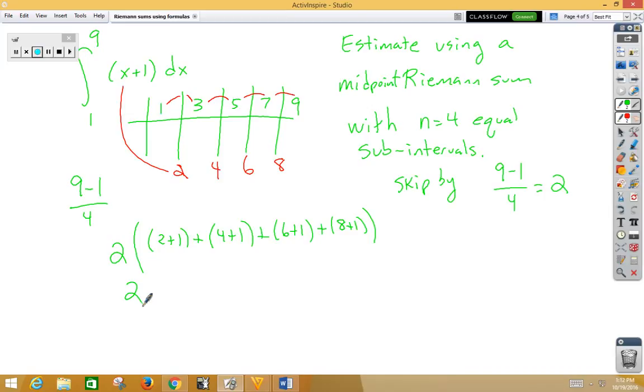Doing these calculations, we would have a 3 plus a 5 plus a 7 plus a 9. That would be 2 times 24, which would give us a 48.